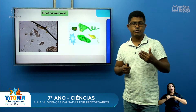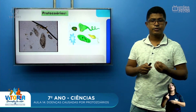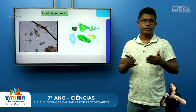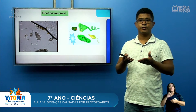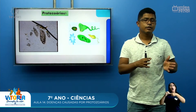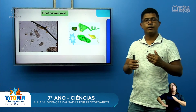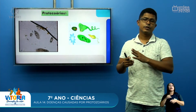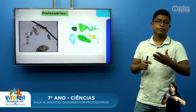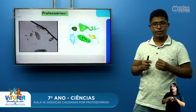Os protozoários são seres unicelulares, do tamanho de uma célula, e que possuem, às vezes, flagelos — como se fossem uma pequena cauda — para se movimentar no ambiente em que vivem. Também alguns possuem cílios, que fazem com que se movimentem, e outros possuem pseudópodes, como falsos pés, como a ameba.